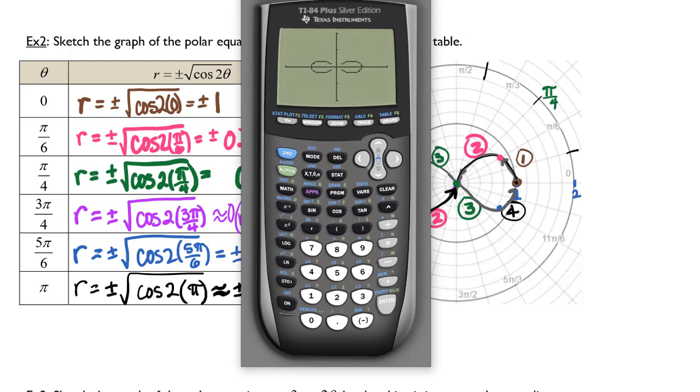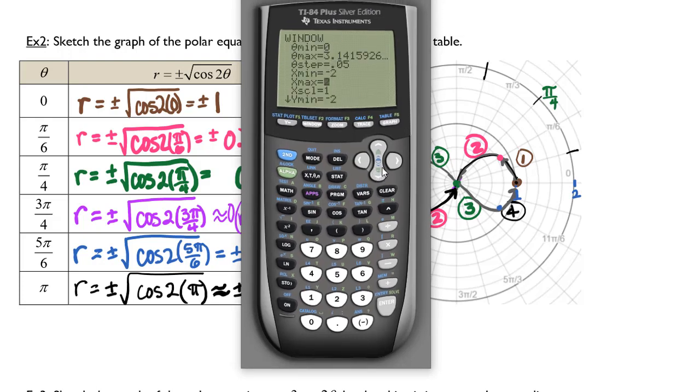You could always make your window slightly zoomed in. So you could go from negative 1.5 to 1.5. And the y min going from negative 1.5 to 1.5. And then graph that.